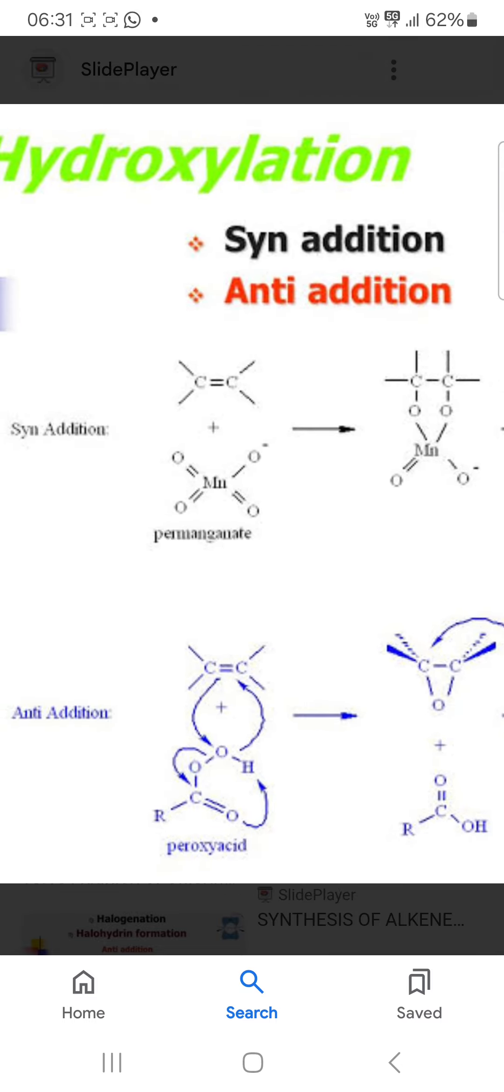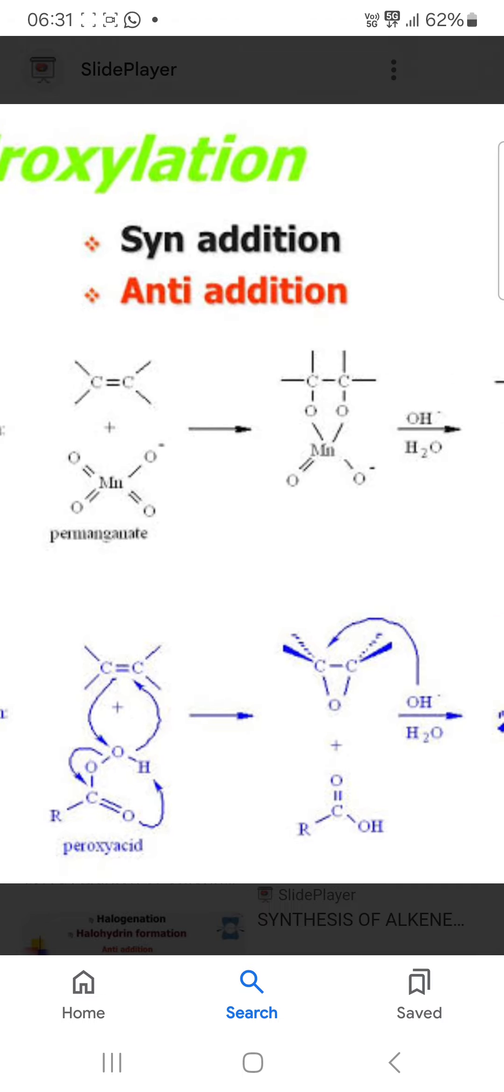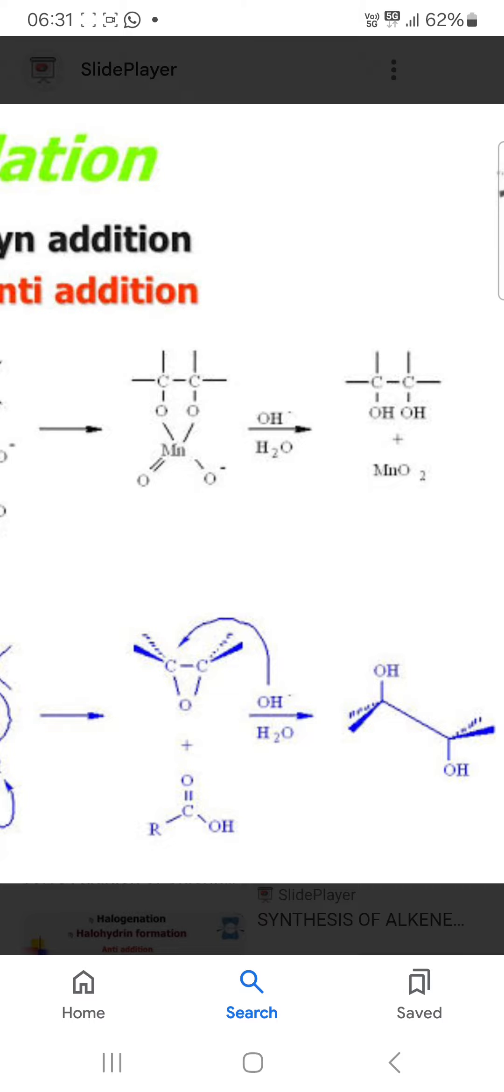Example number one: syn addition with potassium permanganate. It reacts with alkene forming carbon-oxygen bonds with a cyclic intermediate. Then on hydrolysis in presence of base you will get the cis diol.